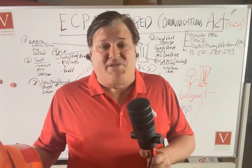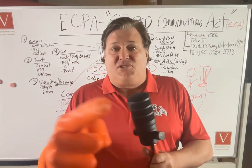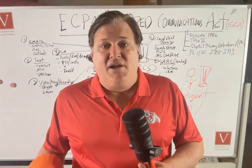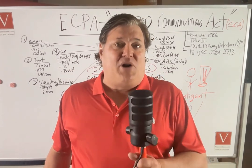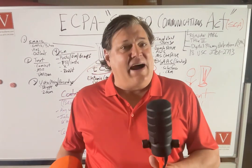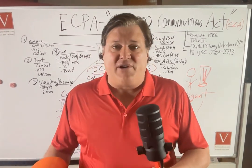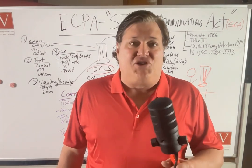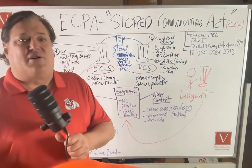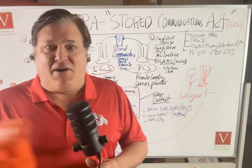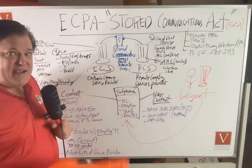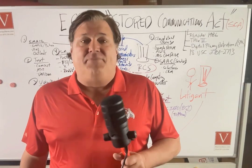There are basically two types of covered entities. First, we have ECS — Electronic Communication Service Providers. These are companies that provide email services: Gmail, Yahoo, AOL, and Outlook. Any email service provider would be governed by the Stored Communications Act. Anyone that allows for text messaging — like Verizon, AT&T, T-Mobile — they're also an ECS. Companies that allow for voice messaging and recording like Skype and Zoom must also comply. Any companies that allow the transmission of electronic communications can be an ECS.